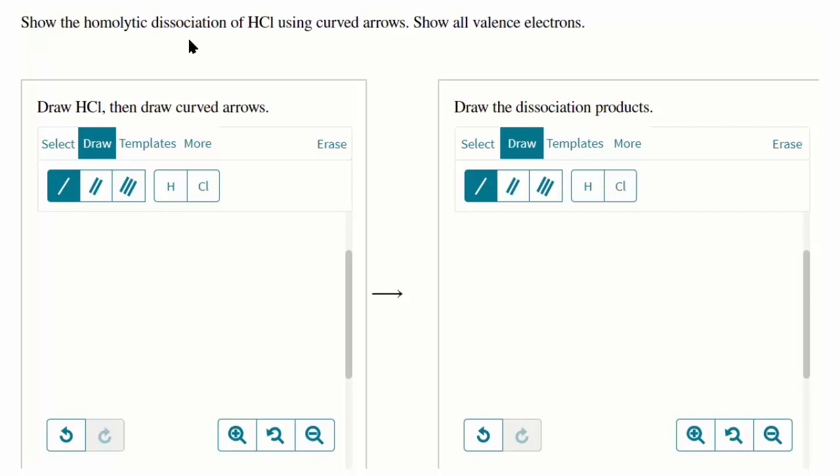In this video, we will show how to draw atoms, non-bonding electrons, and curved arrows. The question asks us to show the homolytic dissociation of HCl using curved arrows.